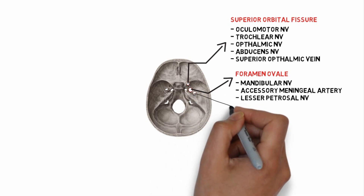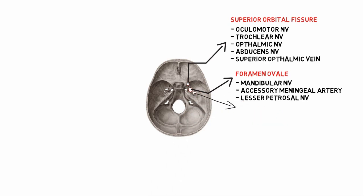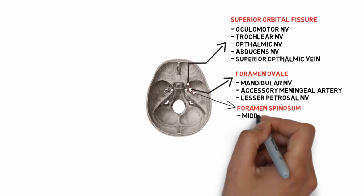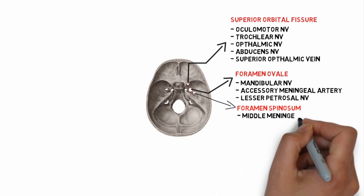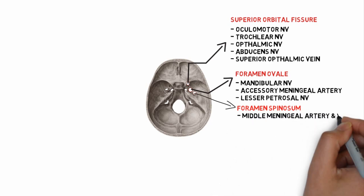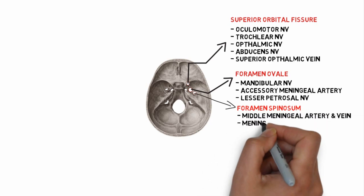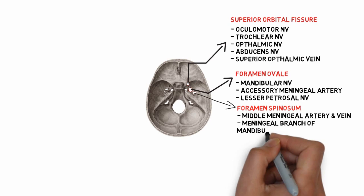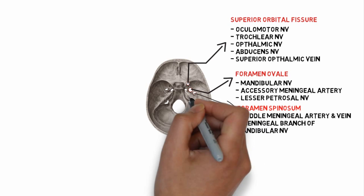The third one is the foramen spinosum. Structures passing through it include the middle meningeal artery and the meningeal branch of the mandibular nerve.